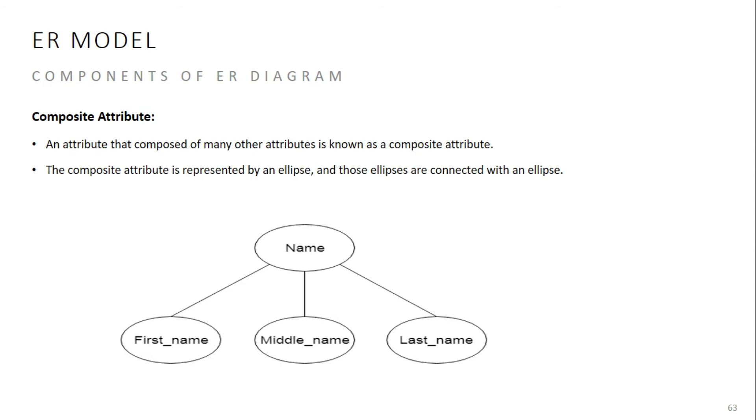How do we represent composite attributes? We represent them by connecting sub-ellipses to the main ellipse in the ER diagram. That is how we show composite attributes.